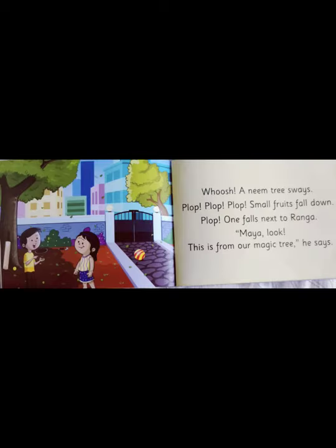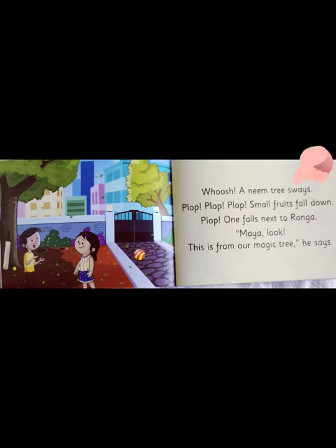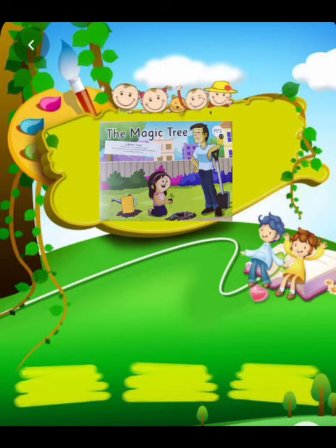And the next word is Small. The next day she sees a small leaf. And the next word is Sways. A neem tree sways. Children, I hope you all enjoyed learning these words.